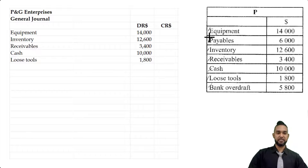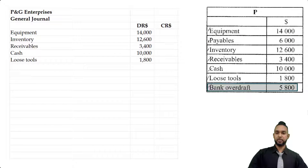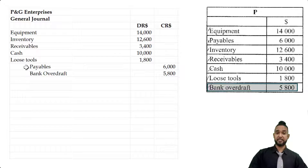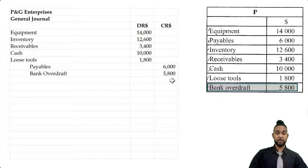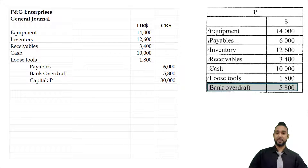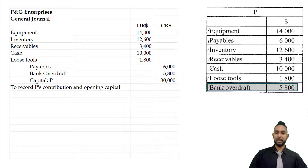Next we have liabilities — that's the payables item and the bank overdraft. Payables and overdraft are credit items and they are indented. We're missing the capital figure, because the sum of the debit entries is going to be greater than the sum of the credit entries, and we need a credit to balance it off — and that has to be capital. So when you add up your debit entries and subtract the credit items, you're going to get the capital balance for P. It says to record P's contribution and opening capital.